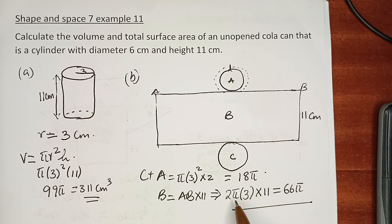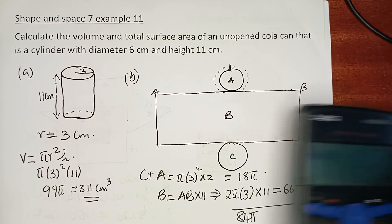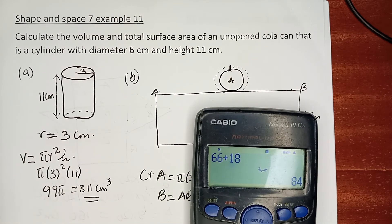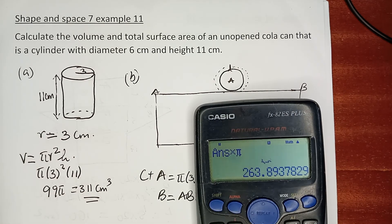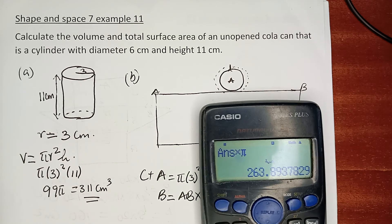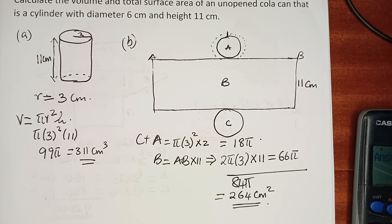To confirm: the curved surface area is 2πr × 11. The radius is 3, so 2π × 3 × 11 = 66π. Adding the two circular ends: 66π + 18π = 84π. Using π = 3.142, we get 84π ≈ 264 cm², which is 264 centimetres squared. That is the total surface area of the whole figure.